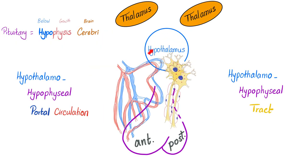This is the relationship between the hypothalamus and the pituitary gland. When it comes to antidiuretic hormone, it's made by the hypothalamus and then goes via the hypothalamic-hypophysial neural tract. The antidiuretic hormone is stored in the posterior pituitary, and then it's released into the bloodstream until it reaches the kidney.